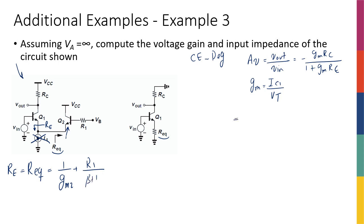Therefore, my gain is going to be negative GM1 RC over 1 plus GM1 times, and then instead of RE, I'm going to write 1 over GM2 plus R1 over beta plus 1. But this beta is really beta 2 in case they were different from each other. So let's actually write that.